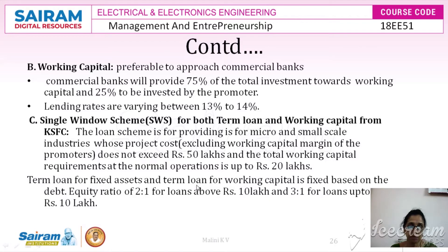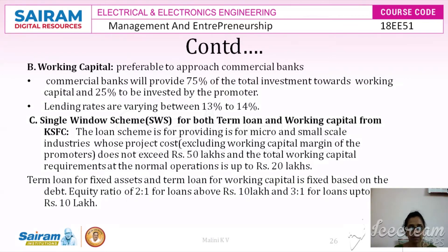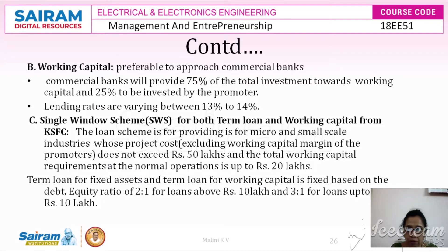The second type of loan is working capital, which is given for raw materials or processes incurred to complete semi-processed goods. Commercial banks provide 75 percent of the total investment towards working capital, and 25 percent again has to be invested by the promoter. This is a recurring kind of investment, unlike term loans which are non-recurring. Lending rates vary between 13 to 14 percent, similar to the term loan. Working capital can also be availed from KSFC or any commercial banks.